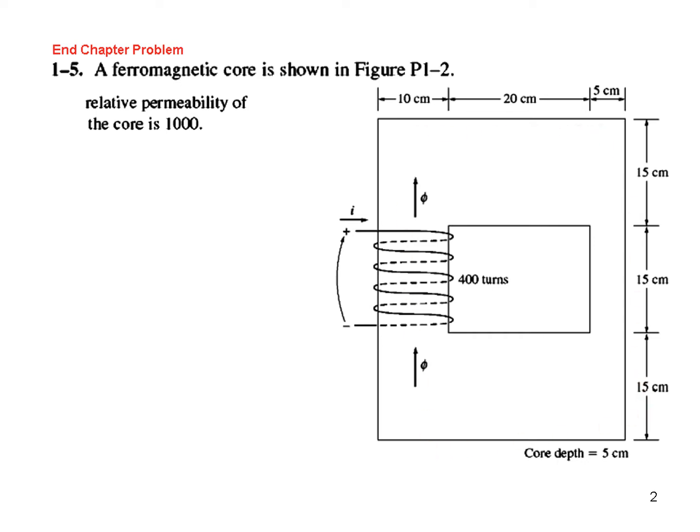And its dimensions you can see this has the width of 10 cm, the right hand side has a width of 5 cm, the top and bottom they have a width of 15 cm. There are 400 turns and the relative permeability of the core is 1000, so mu_r is 1000.